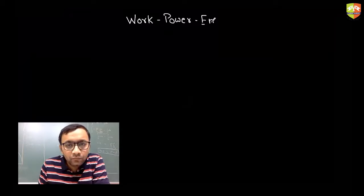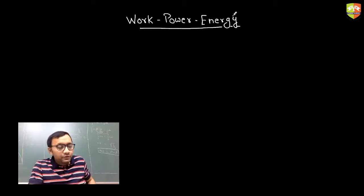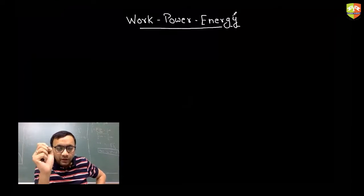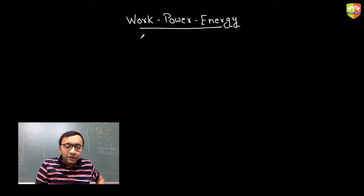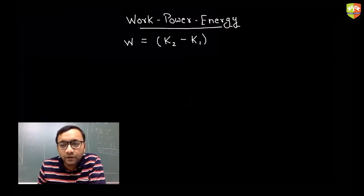We started this chapter last class — work by energy. What we did last class was introduce the concept of work and kinetic energy. Towards the later part, we got a relation between the work done on a mass and how much kinetic energy is changing. The total work done on a single mass is equal to change in kinetic energy: K₂ minus K₁ equals work done.